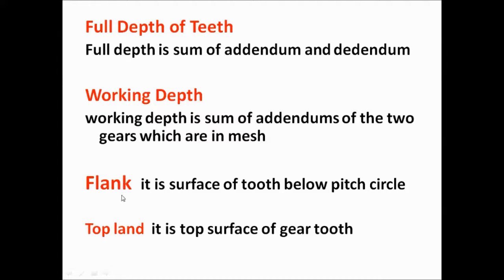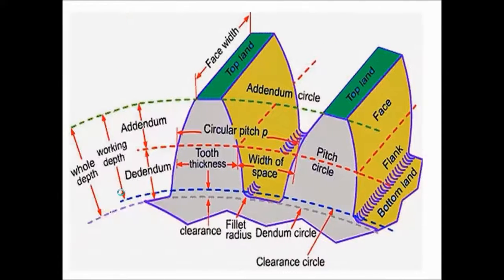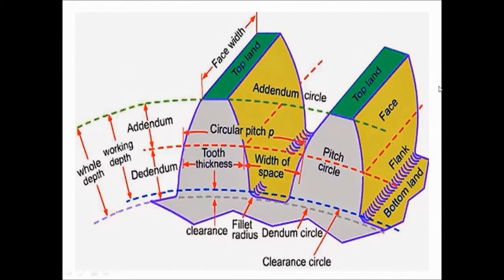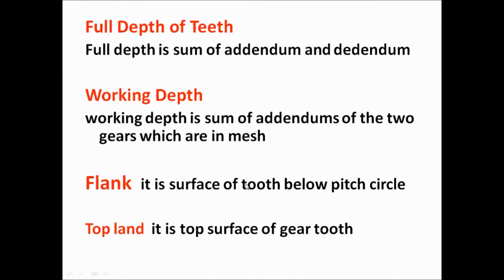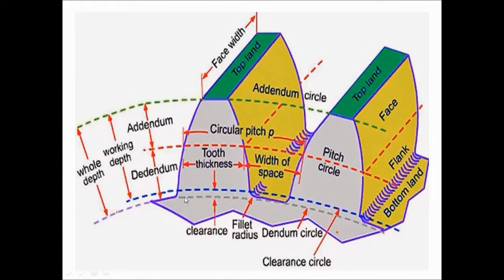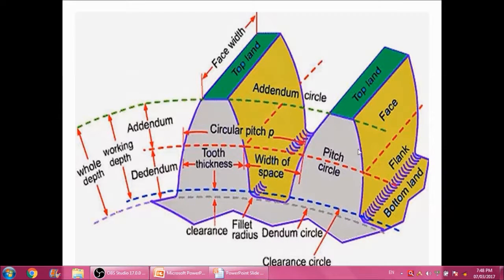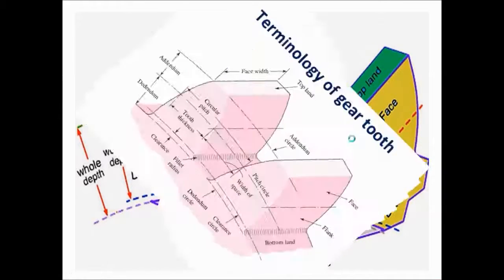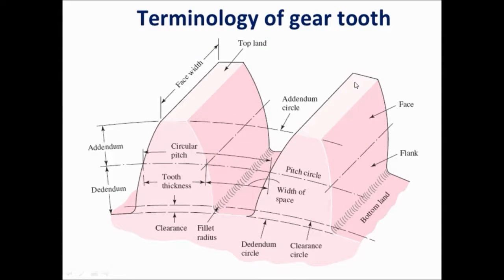Flank — the flank is the surface of the tooth below the pitch circle. You can watch in this image the surface which represents the flank. Then, top land — as you can watch in this image, the top land is the top surface of the gear tooth.